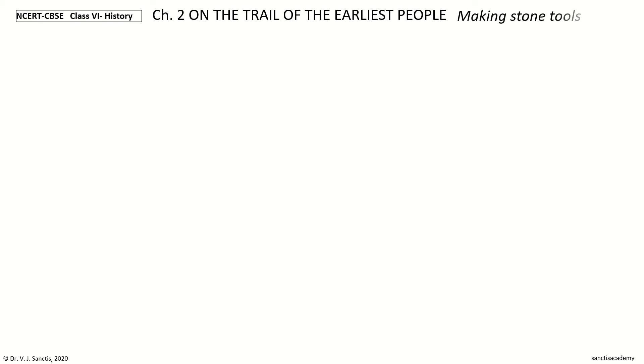Hi, welcome to NCRT CBSC Class 6 History Chapter 2: On the Trail of the Earliest People. In this video, we will be revising the section on Making Stone Tools.